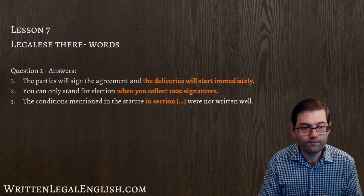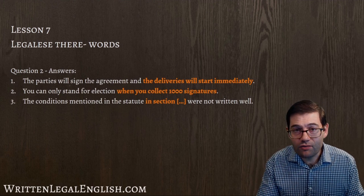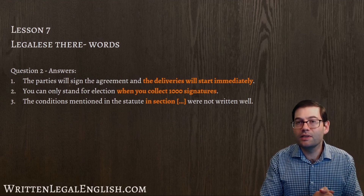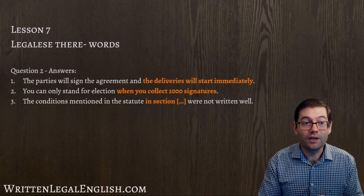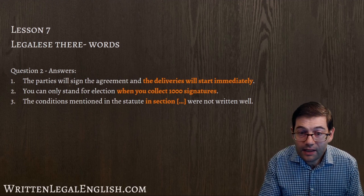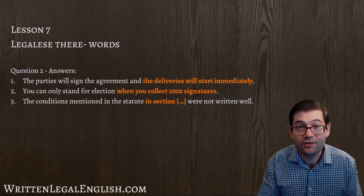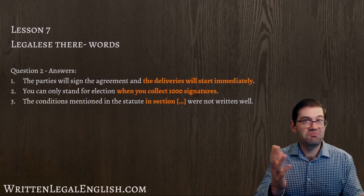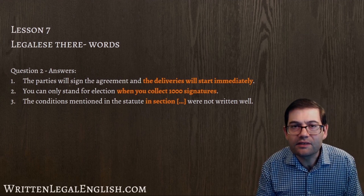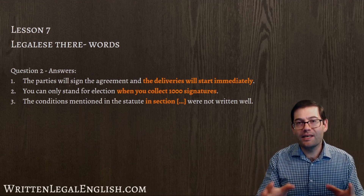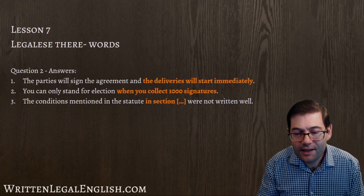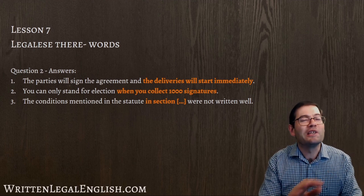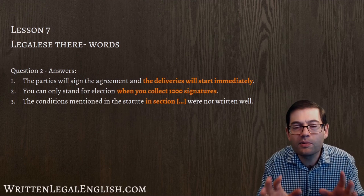Let's have a look at question two. These are my suggested redrafts. The parties will sign the agreement and the deliveries will start immediately. You can only stand for election when you collect one thousand signatures. The conditions mentioned in the statute in section 2.4 were not written well. You can see that my suggested answers are very easy to understand, still legal, still business-like, still professional — and we don't need to use those horrible legalese words.